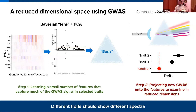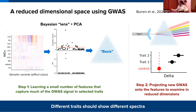The basis captures much of the GWAS signal in selected traits and summarizes the main axes of genetic risk. We can then project independent GWAS datasets onto the basis and expect different traits to show different spectra across components. To call significance, we made a statistical test comparing the projection value to a null GWAS control — allowing examination of independent GWAS datasets in a reduced, manageable number of dimensions.